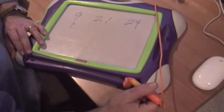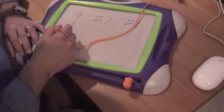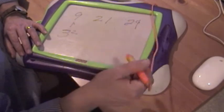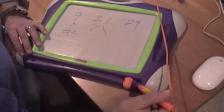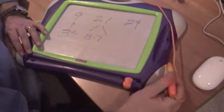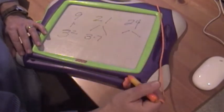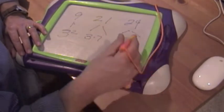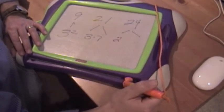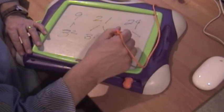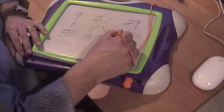9 as prime factor, if you prime factor it, it's 3 squared. 21 is 3 times 7. And 24 is 2 cubed times 3.